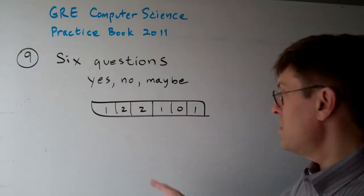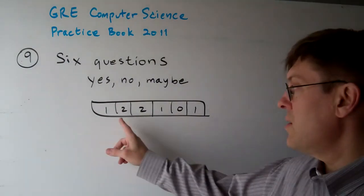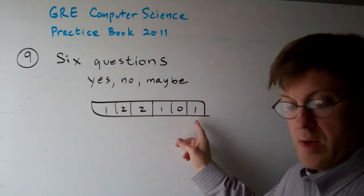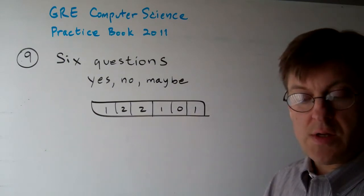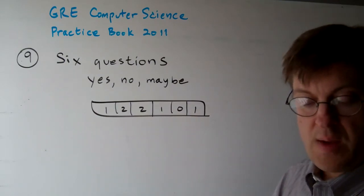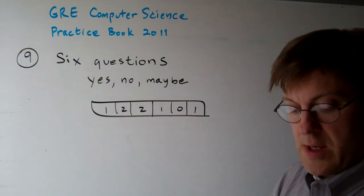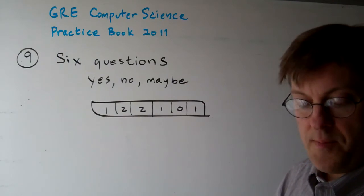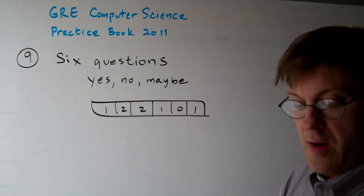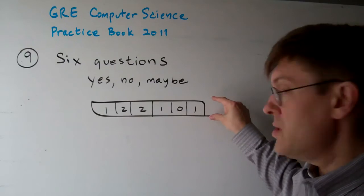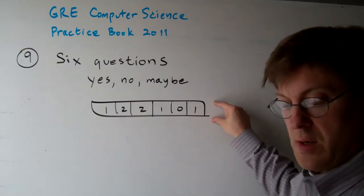So one person's response might look like this: 1, 2, 2, 1, 0, 1. Six questions — those are the answers they might give. The programmer then declares an array with one slot for each possible combination. This is one combination.